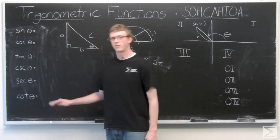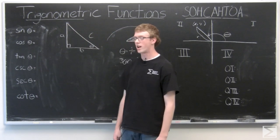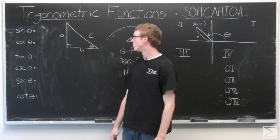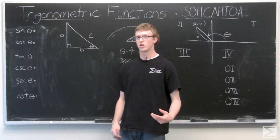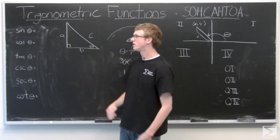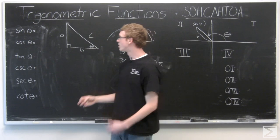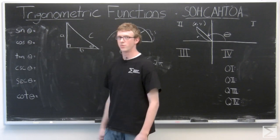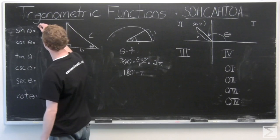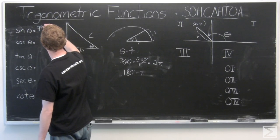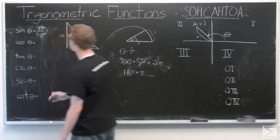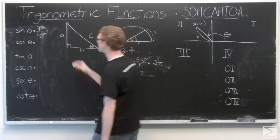Now we're going to go over the trig functions in relation to a right triangle. The trig functions relate the sides of a right triangle to an angle theta, and this is where SOH CAHTOA comes in. SOH CAHTOA — they're all abbreviations. The first trig function is sine, which is the S in SOH CAHTOA. OH stands for opposite over hypotenuse. In this triangle, that's A over C.